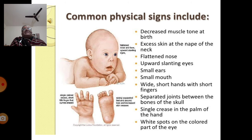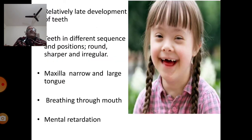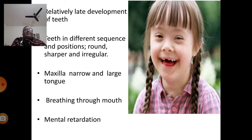Chromosome number 21 being present in three copies, you can conclude that the child has Down syndrome. Then, relatively late development of the teeth, teeth in different sequence and positions — they are round, sharper, irregular. Then, narrow maxilla, large tongue, breathing through the mouth — oral breathing, not nasal breathing. The most marked symptom you see is mental retardation; their mental age will not be normal.